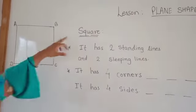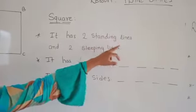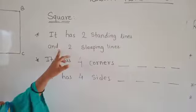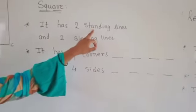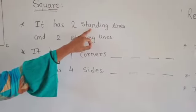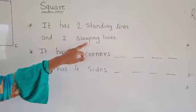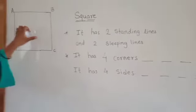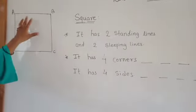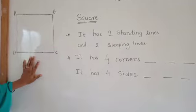A square has two standing lines and two slipping lines. Standing lines means vertical lines; slipping lines means horizontal lines. A square is made by two standing lines and two slipping lines.